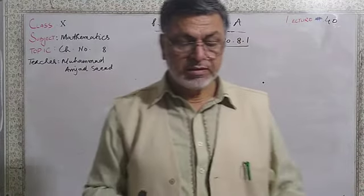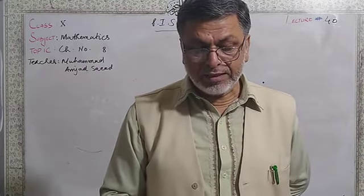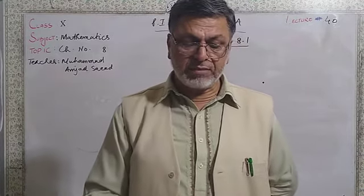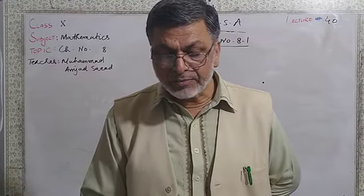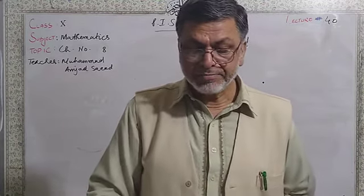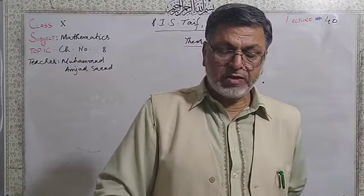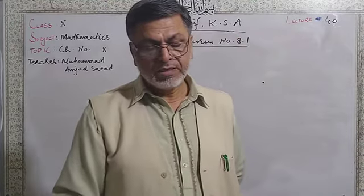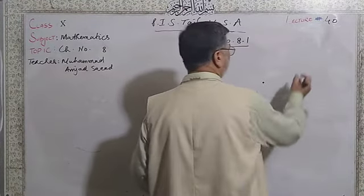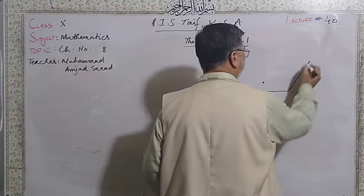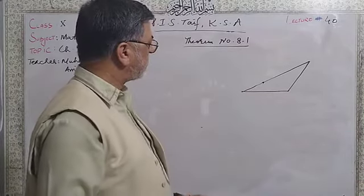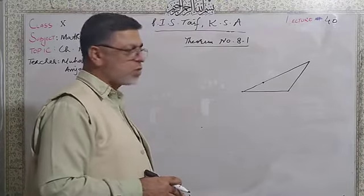What is the statement? In an obtuse angle triangle, the square on the side opposite to the obtuse angle is equal to the sum of squares on the sides containing the obtuse angle, together with twice the rectangle contained by one of the sides and the projection on it of the other. Basically, in an obtuse angle triangle — a triangle whose one angle is greater than 90 degrees — that triangle is known as an obtuse angle triangle.